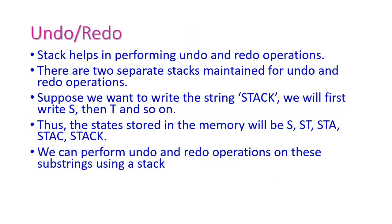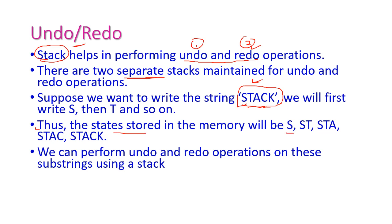The next application is undo and redo operations. Stack is very important to perform undo and redo operations. We need to maintain two separate stacks: one for undo and a second stack for redo. For example, if we want to print the word 'stack', the stack stores the substrings in memory: S, ST, STA, STAC, STACK. If we use undo, the string reverts to the previous state. We perform undo and redo operations on these substrings using only the stack structure.